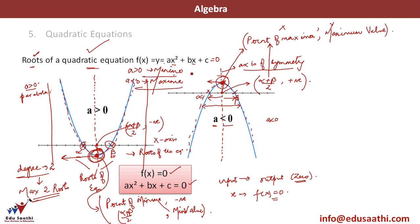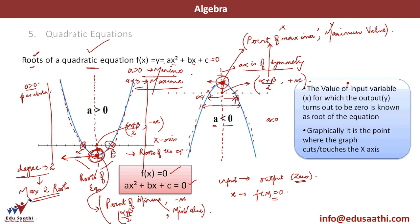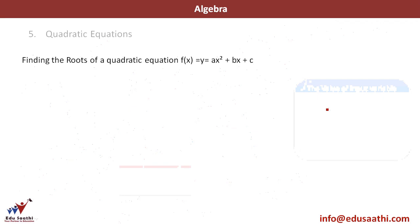To revise: the value of input for which the output variable turns out to be 0 is known as the root. Graphically, it is the point where the graph cuts or touches the x-axis. But how do we find the roots? That is an important question. Let us move forward and understand how to find out the roots of a quadratic equation.